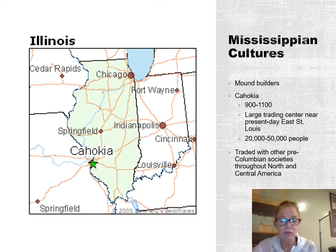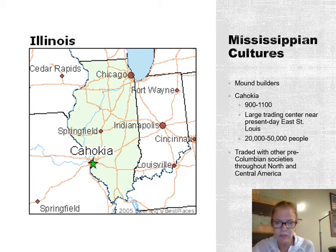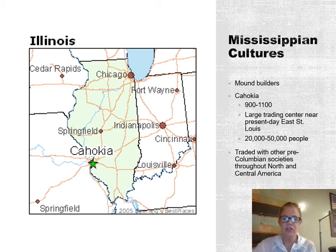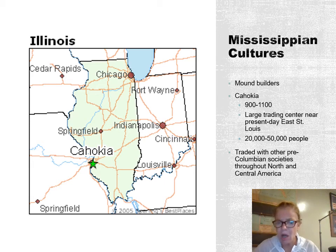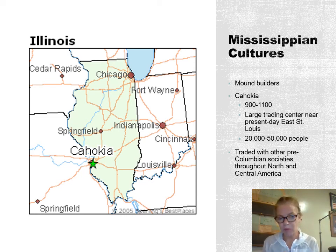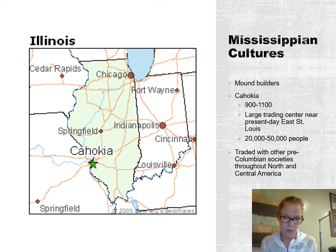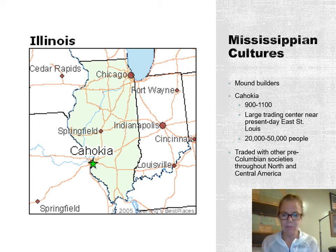Down near East St. Louis in Illinois, we had one of the largest civilizations that existed in what is now the United States before Christopher Columbus — and that is Cahokia. It's believed this was in existence from about 900 to 1100 AD, with about 20,000 to 50,000 people — a vast civilization. It was centrally located and they traded with people in all different directions, all the way down into Mexico and Central America and probably South America. We know that because of turquoise and other items found at the location. The problem is it died out because they ran out of fuel — they needed wood and were running out of it.